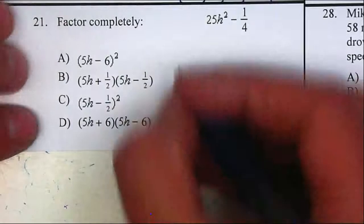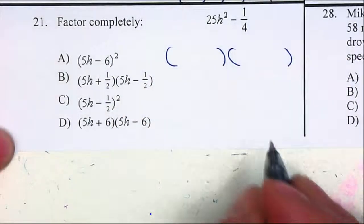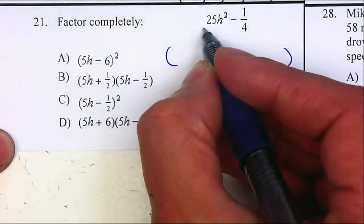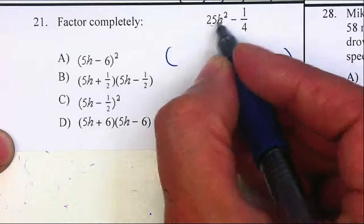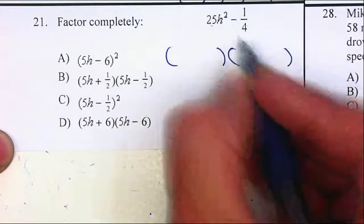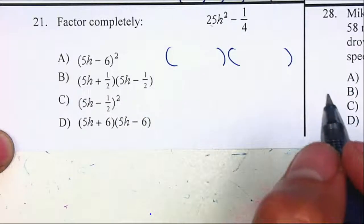So I'm just going to use my double parenthesis to factor. You should be able to recognize that 25 is a square, 25H squared is a square, 1 is a square and 4 is a square. So we are using the difference of two squares.